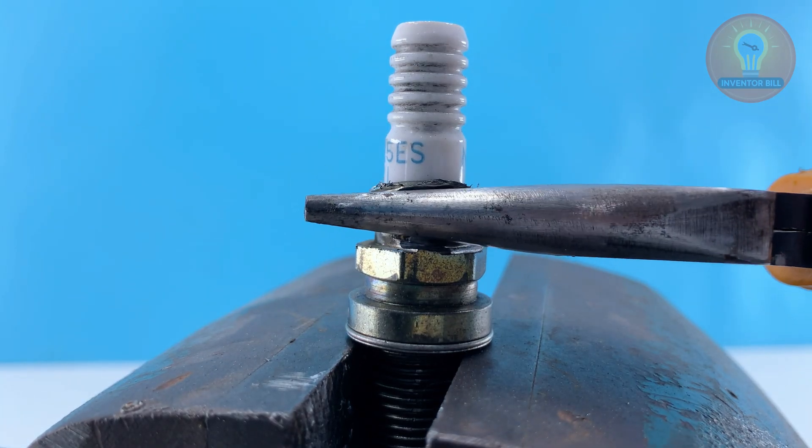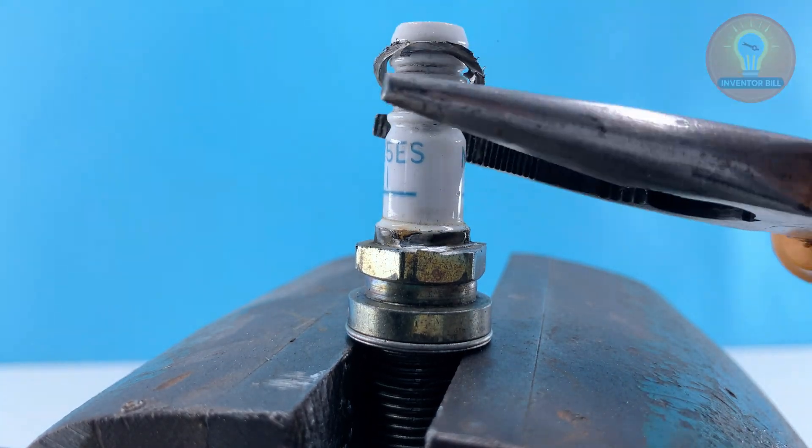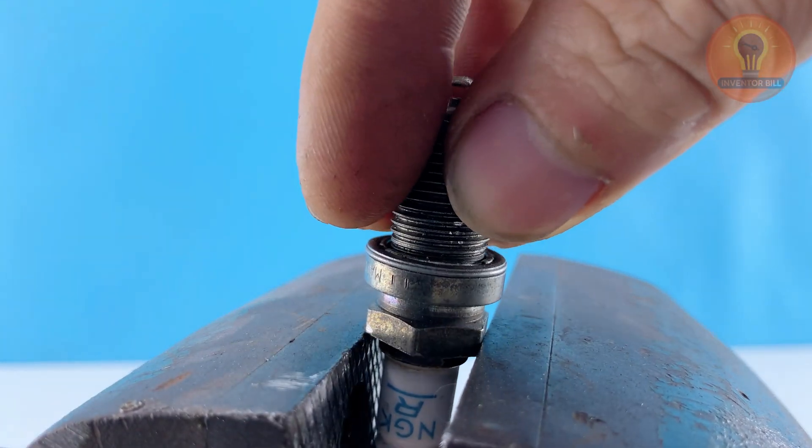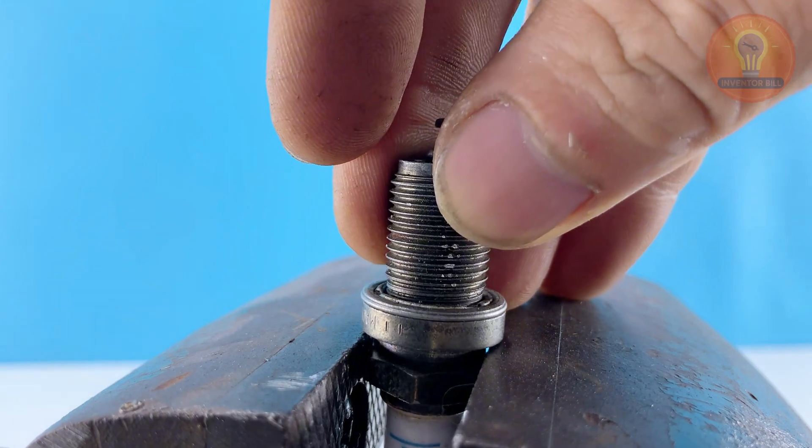You'll notice the inside has a small electrode. We won't need that part, so use a hacksaw or pliers to cut it off cleanly. What you want to keep is the ceramic insulator, the white center section.